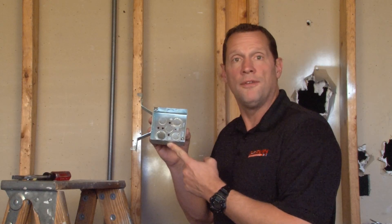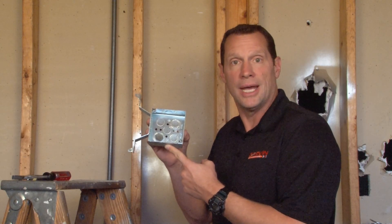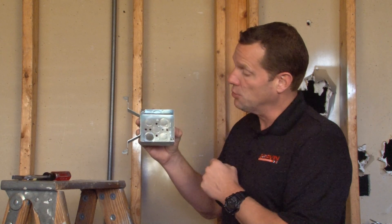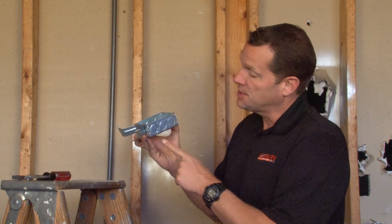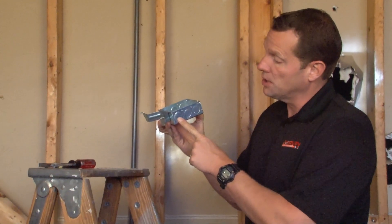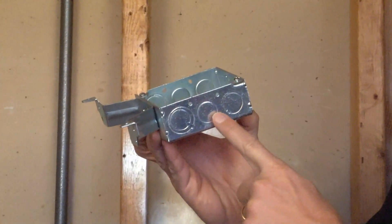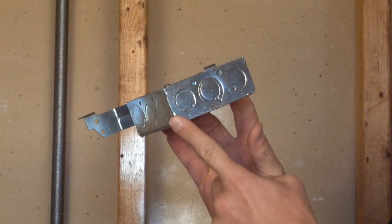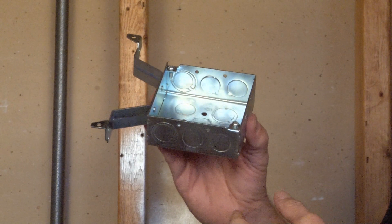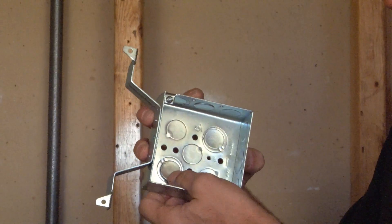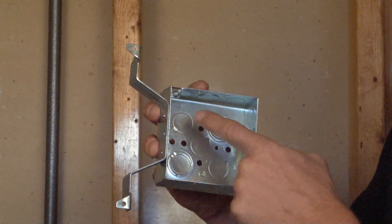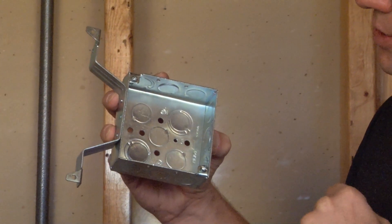Part number 52151DWS is a 4-inch square electrical junction box that has half and three-quarter inch concentric knockouts, as well as standard half-inch conduit knockouts on all three sides. It also has half and three-quarter inch concentric knockouts in the bottom and three straight half-inch knockouts.